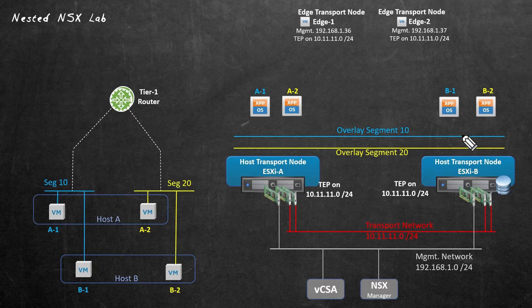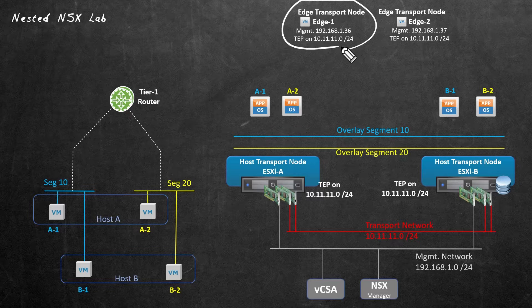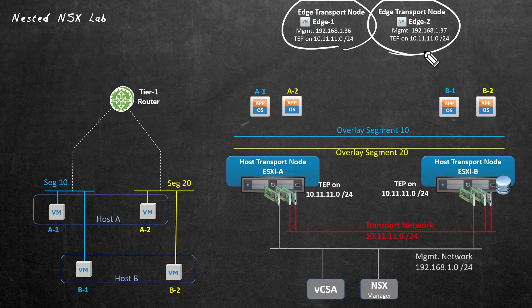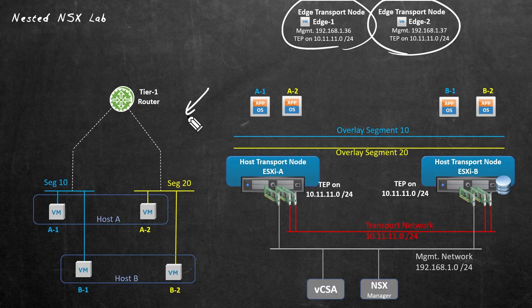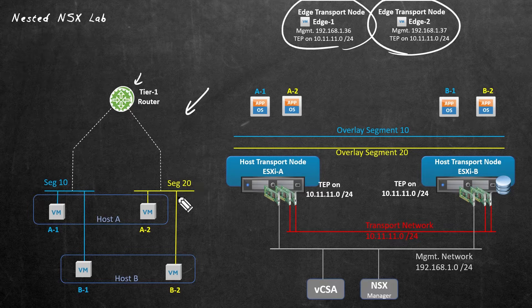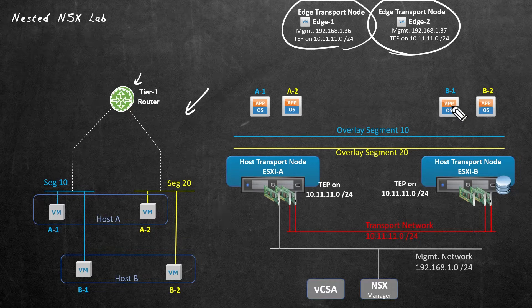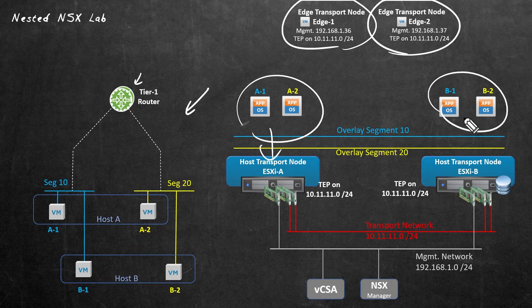At the moment, we have this topology with these two ESXi hosts acting as host transport nodes. We just deployed edge one and also edge two. Previously, when we were talking about distributed routers, we set up a distributed router called Tier 1 Router that was connected to two segments — seg 10 and seg 20. On each of those we had two VMs: A1 and B1 on segment 10, and A2 and B2 on segment 20. Those VMs are being supported by their respective hosts as shown.